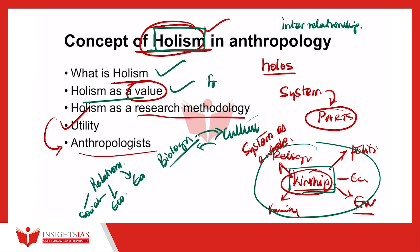We can quote Franz Boas, who started the whole idea of studying a society in a holistic manner. Whereas the classical evolutionists focused on specific areas of culture — either religion, language, or kinship — they did not study it from a holistic perspective. Franz Boas introduced scientific rigor to study society or culture from a holistic perspective. That is why in American anthropology we have cultural, biological, linguistic, and archaeological studies all studied in an integrated holistic manner, which distinguishes American anthropology from its European counterpart.